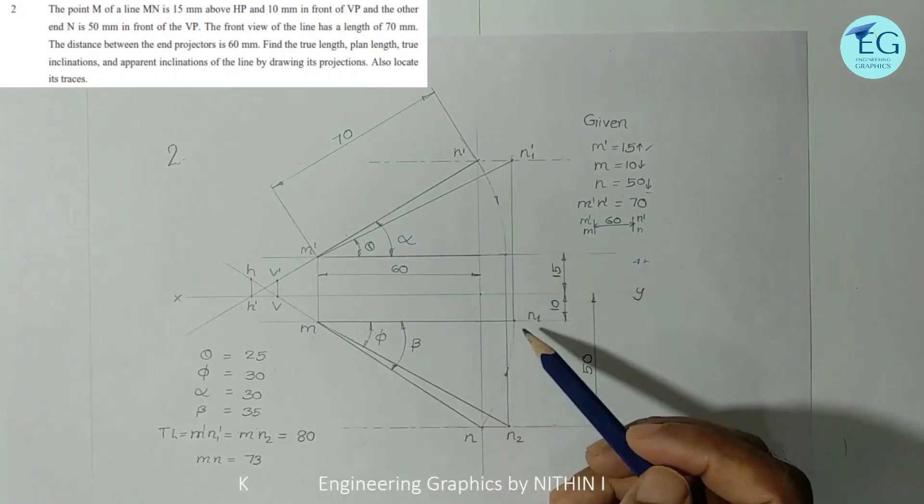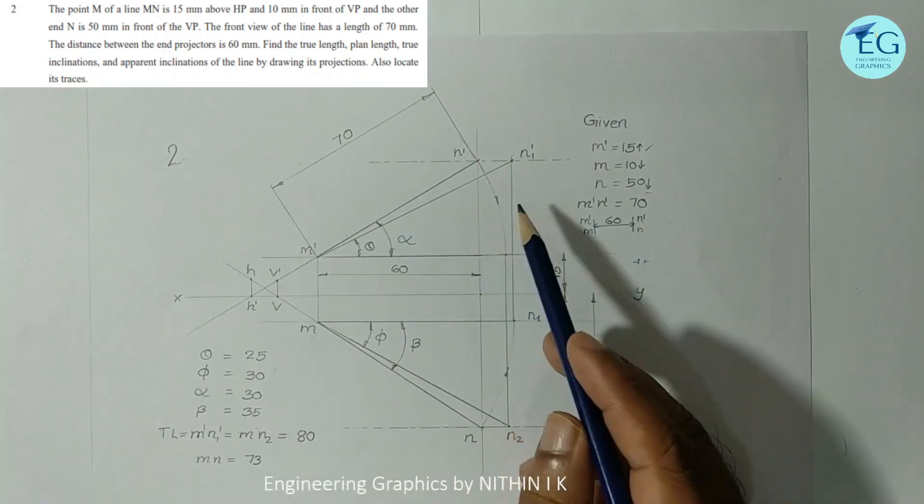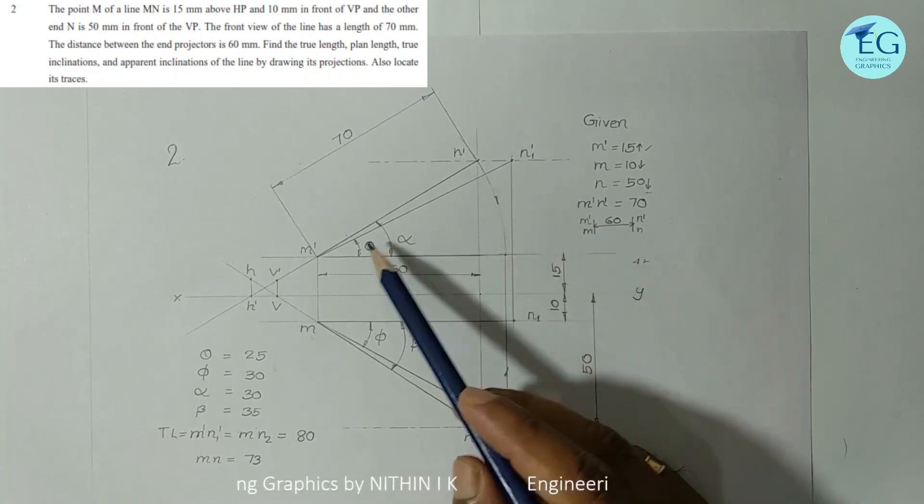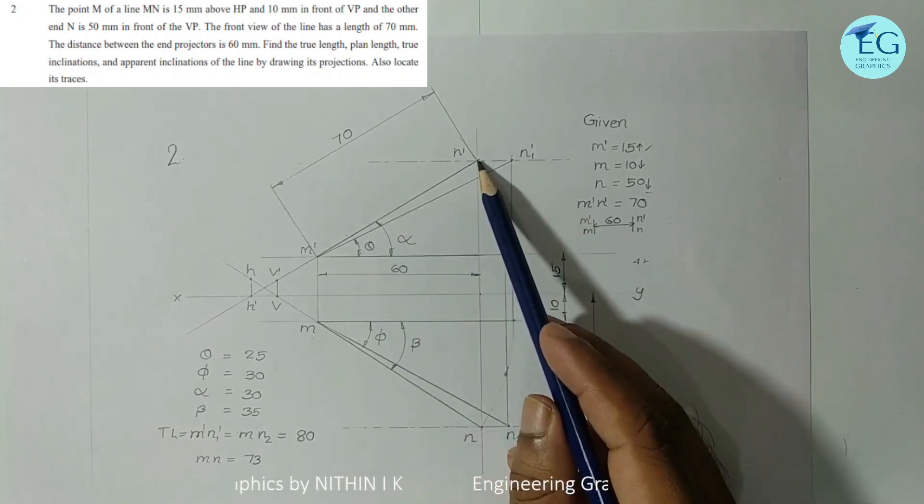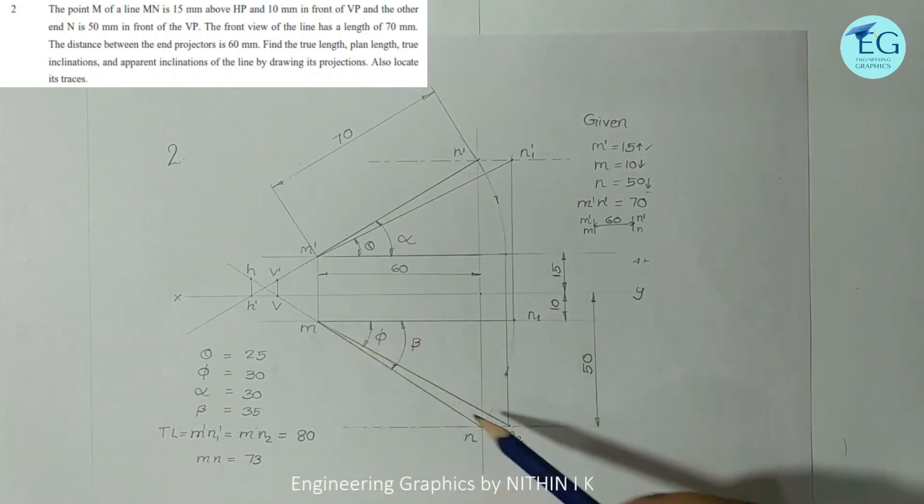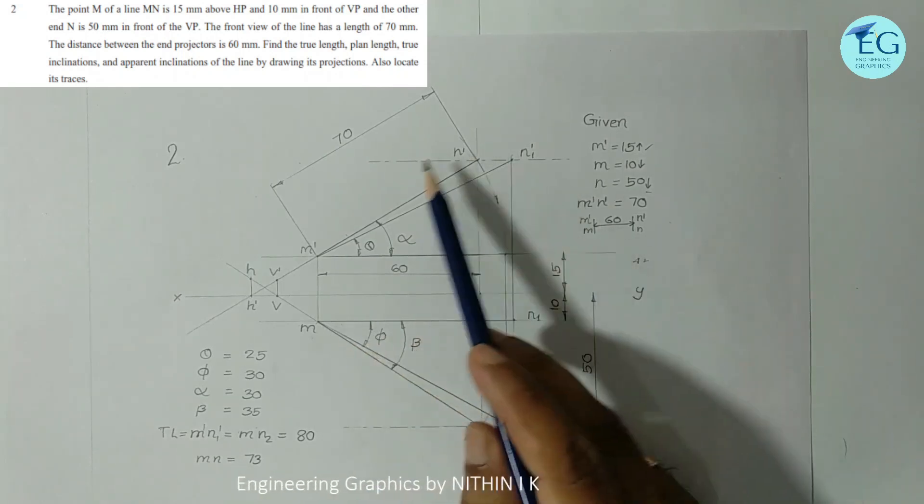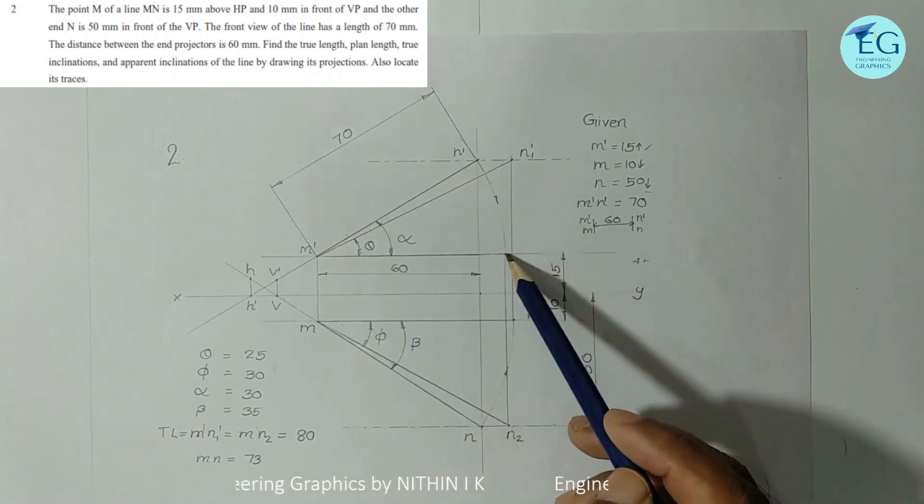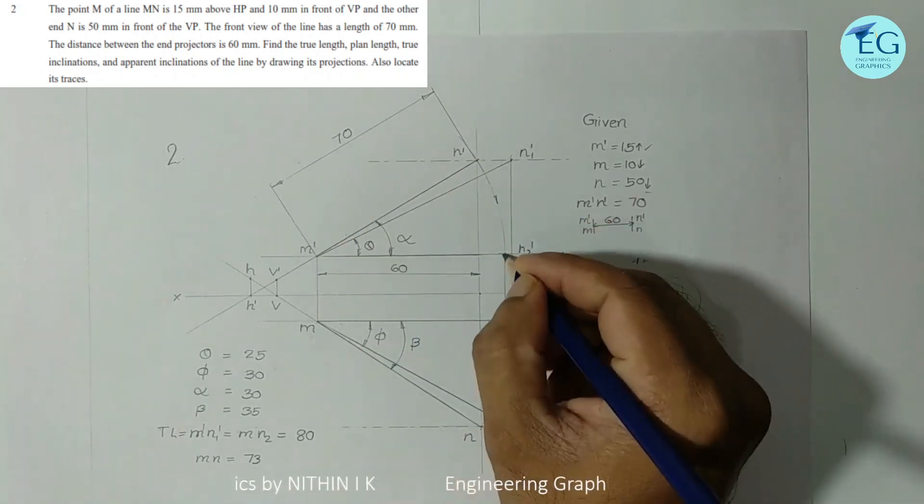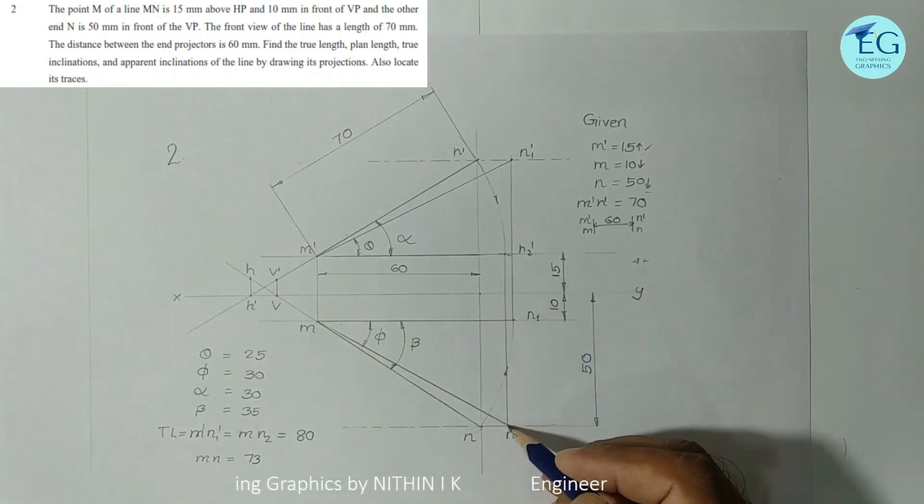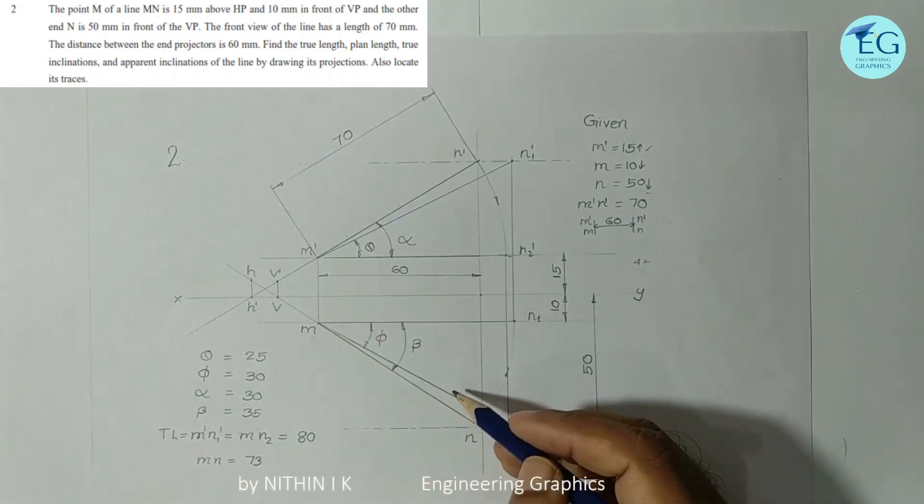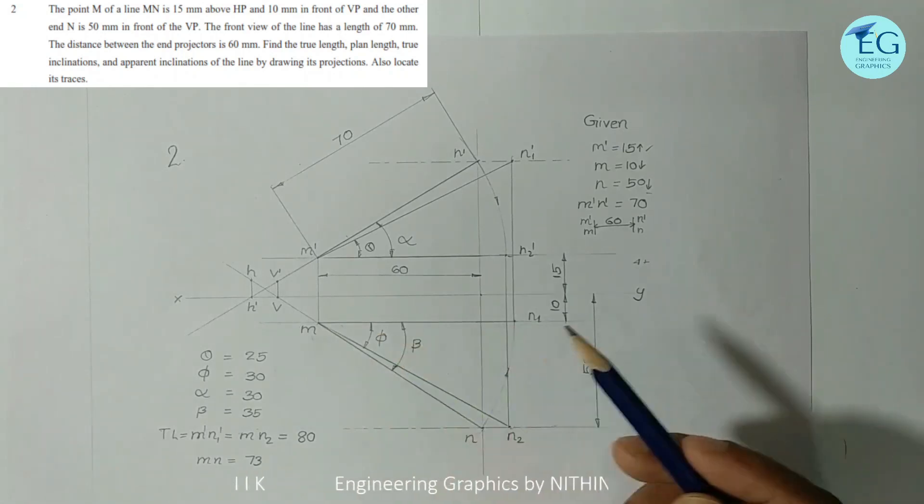We use rotating line or plane to find true length and traces. I use rotating line, true length and true inclination with VP. That is theta and MN2. Locate the front view, rotate XY pair. N2 dash. N2 dash means n locus. MN2 is true length, that is making inclination.